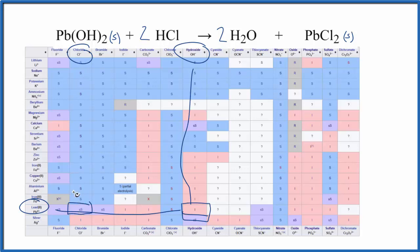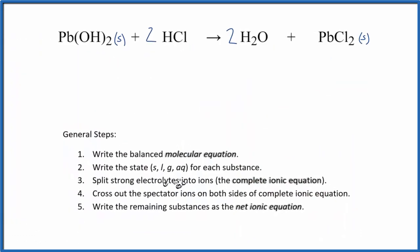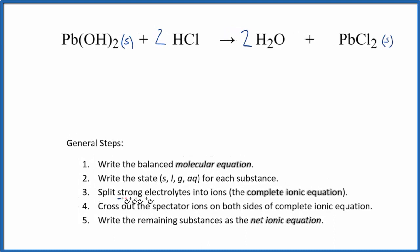All right. Let's get on with the ionic equation. Once we have the states, next we're going to split the strong electrolytes into their ions. So these are the things that are aqueous. We actually should write the states for the hydrochloric acid. That's going to be aqueous. That's a strong acid. Water, that's just a liquid.